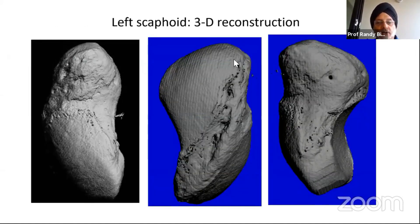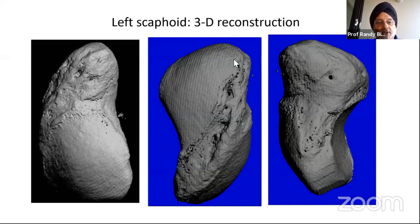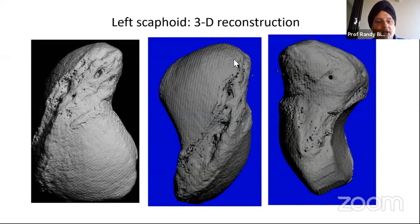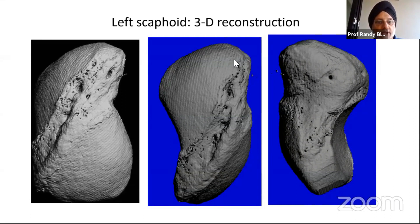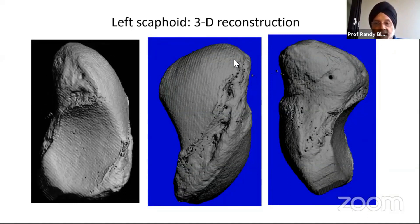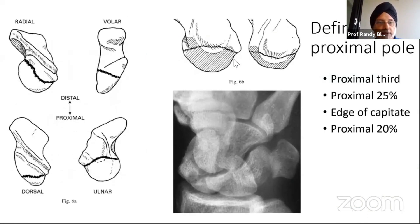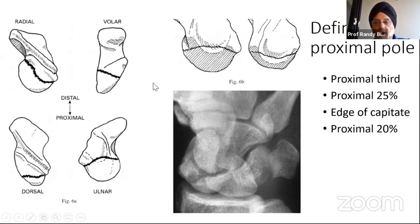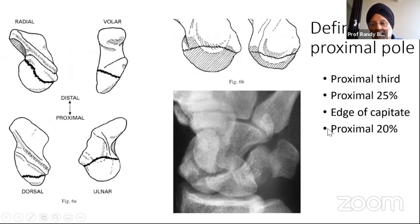This is a micro CT scan image. When I was at the University of Arkansas, we micro CT imaged scaphoids so we could get a detailed view of the anatomy. Comparing that with this study from Compson, published in the JBJS, Compson tried to define what the proximal pole of the scaphoid is. In the literature, some people call it the proximal third, some call it the proximal 25%.